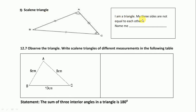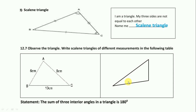Next: 'I am a triangle. My three sides are not equal to each other — name me.' Write scalene triangles of different measurements in the following table. Draw a triangle with measurements 6 cm, 5 cm, and 3 cm.